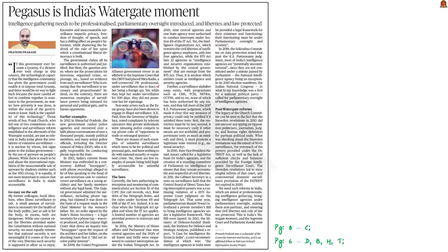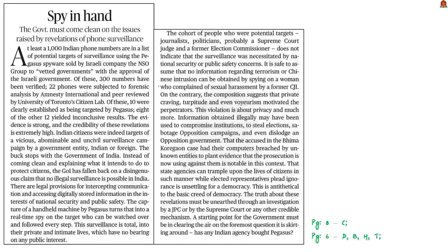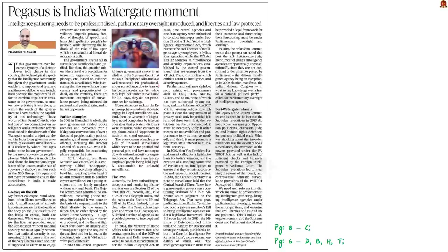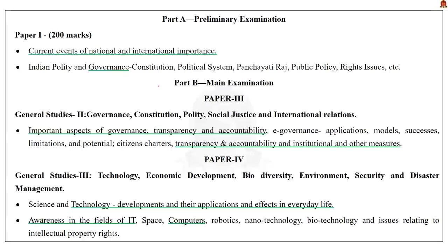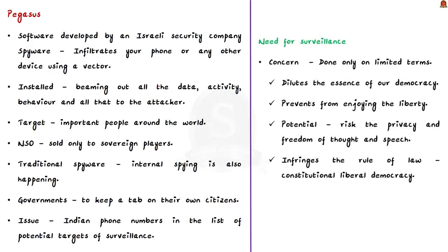Now let us take up these two editorial articles about the Pegasus scandal, which has continuously been in the limelight in recent times. These editorials talk about the need for government regulation and parliamentary oversight when it comes to intelligence gathering. We have already discussed Pegasus in detail — it is a spyware. Once installed on your phone, it infiltrates and collects all data, activity, and behavior and sends it to the attacker. It has been used to target important people around the world.